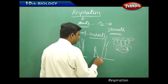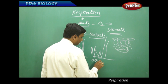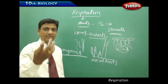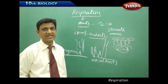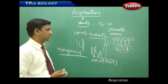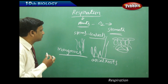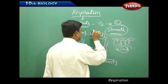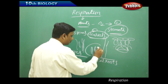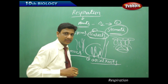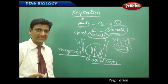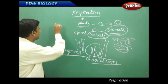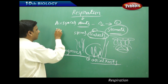In such waterlogged conditions, trees produce special aerial roots that come out of the ground or out of the water to absorb air from the atmosphere. So in summary, respiration in plants takes place through three structures: stomata on leaves, lenticels on stems, and aerial roots. Inside the body of the plant, conduction of air to different cells takes place through air spaces and air columns.